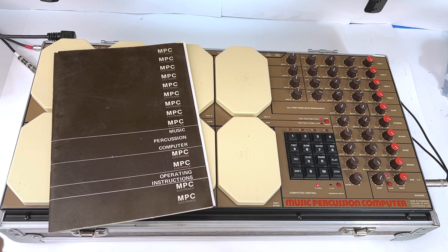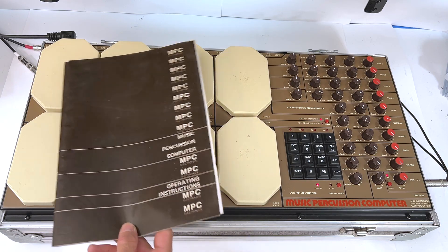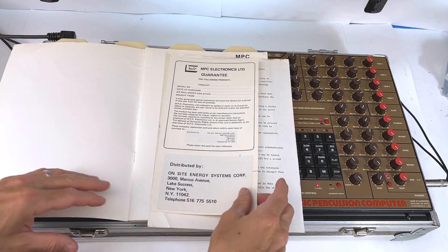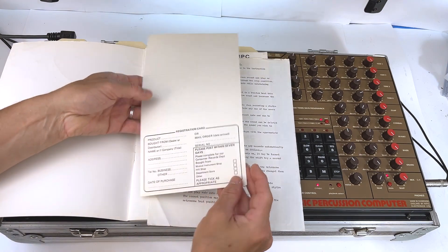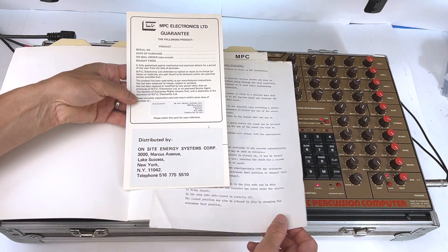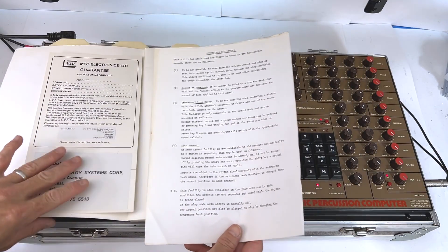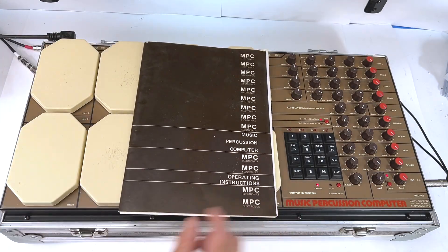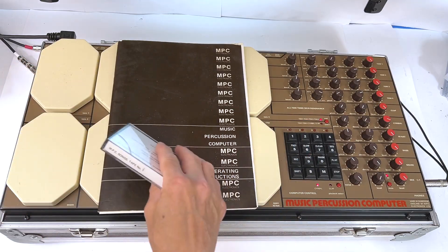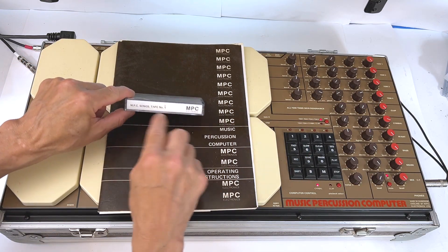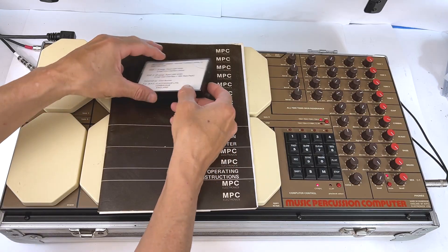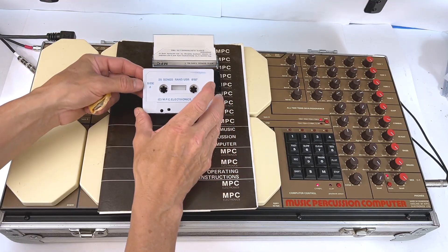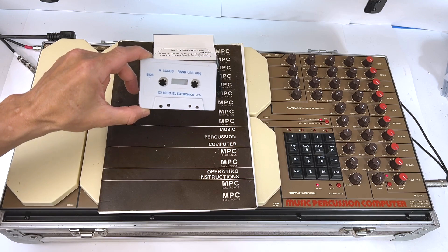So it might be a good opportunity for people to see what this thing actually came with when it was purchased originally. It has the owner's manual and a warranty card. This particular unit had sort of an addendum to the manual. It had a tape with some of the preset patterns on it called MPC Songs Tape One. This is what that looks like—I'm not sure how well you can see this on the camera.